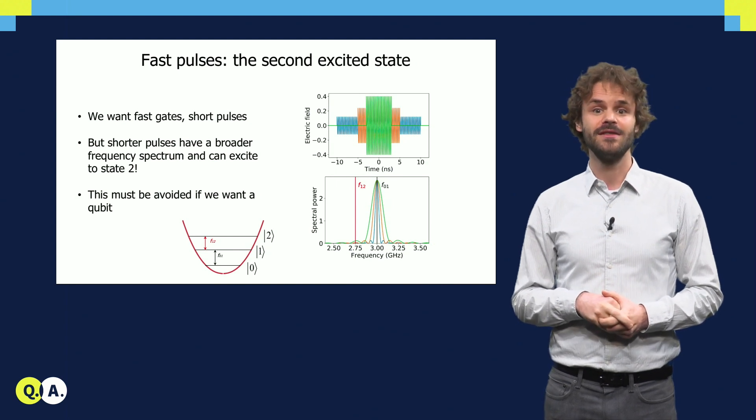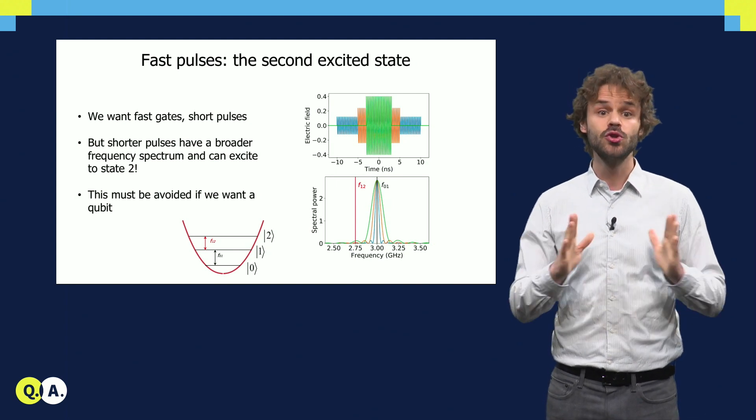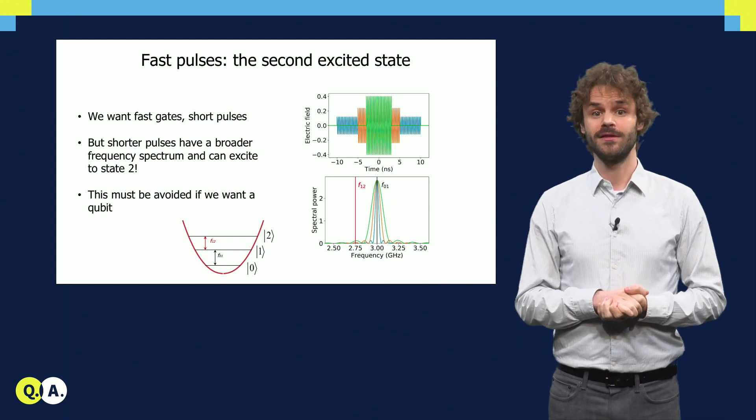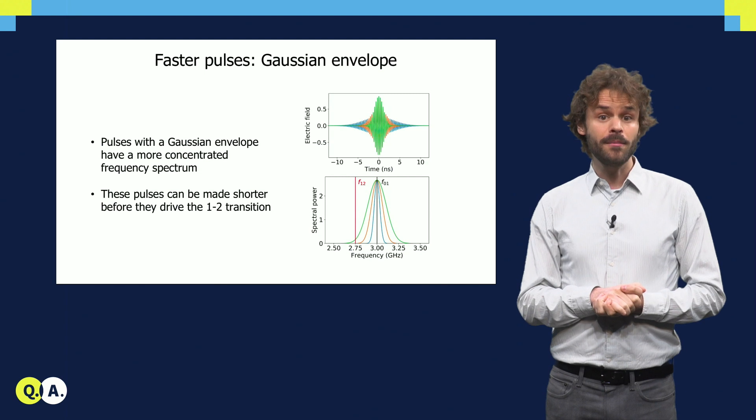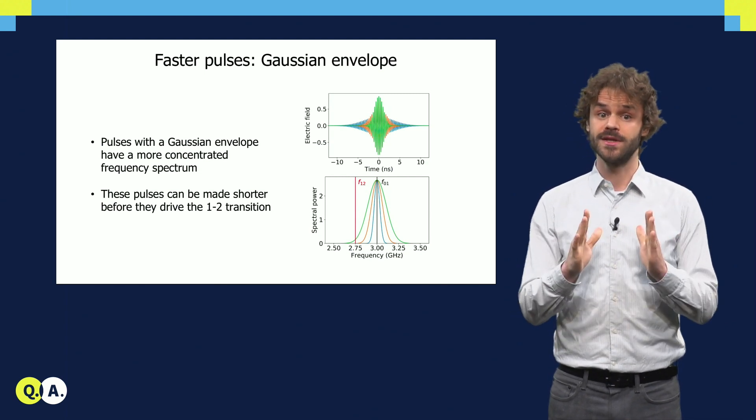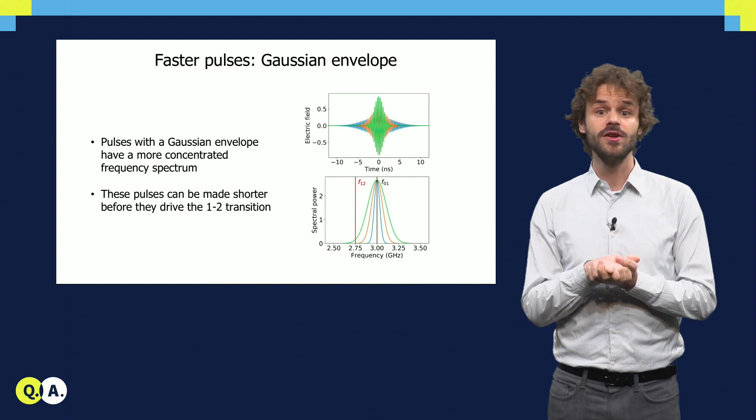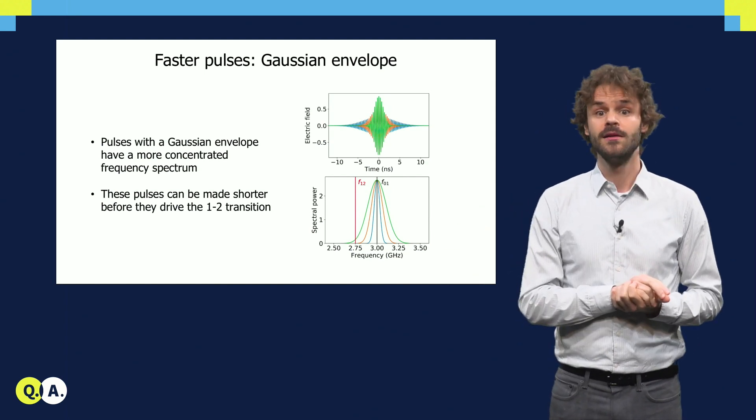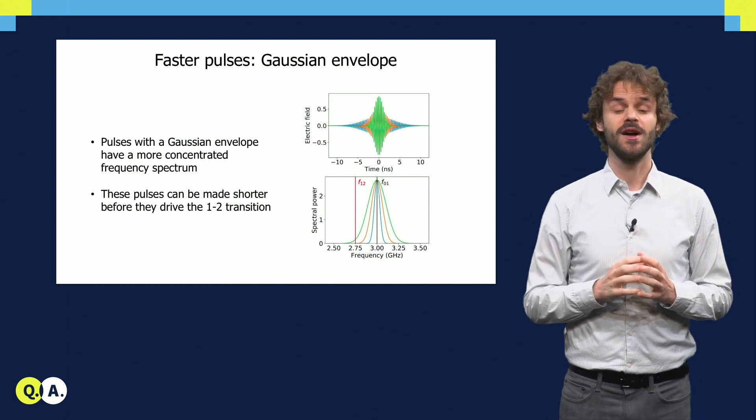We must avoid this situation, and this limits us in making the pulses too short. To push the limit of how short we can make the pulse, instead of a square pulse, we need a pulse which is well localized in time and also frequency. A much better choice is a pulse with a Gaussian-shaped envelope. It has the same area, but affects the 1-2 transition much less.